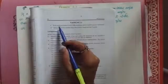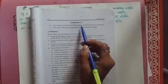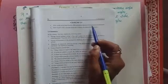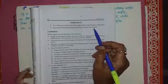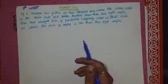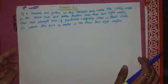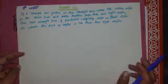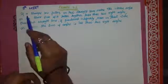Here is the second exercise of Euclid's geometry. The first question is: how would you rewrite Euclid's fifth postulate so that it would be easier to understand? We need to rewrite Euclid's fifth postulate to understand it easily.